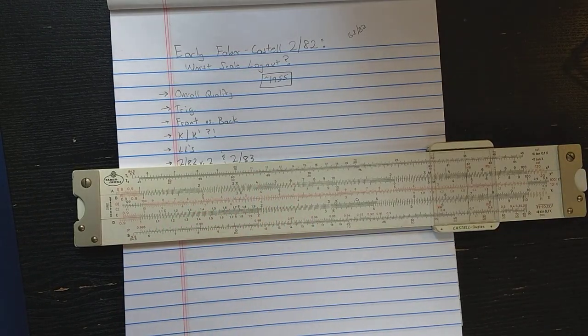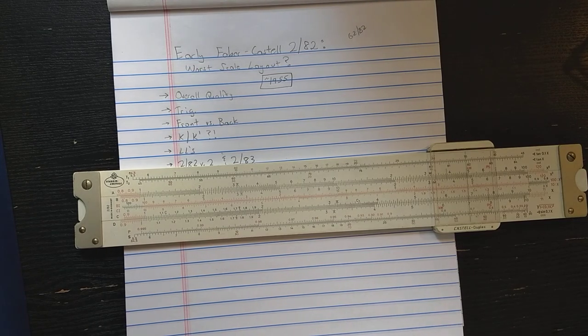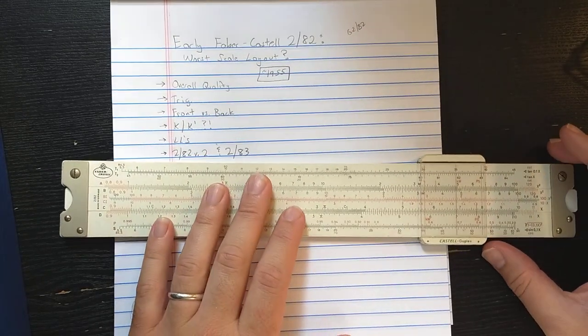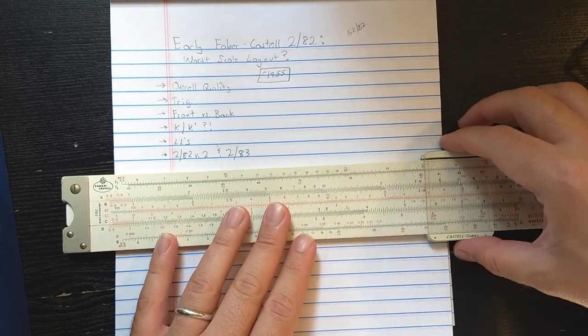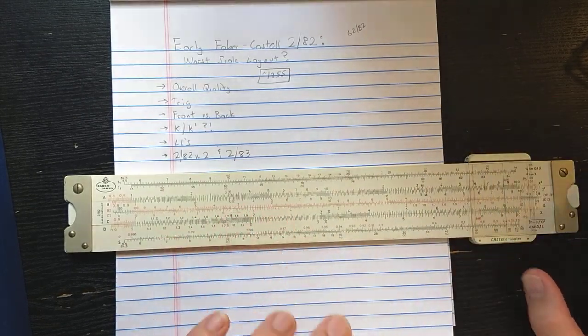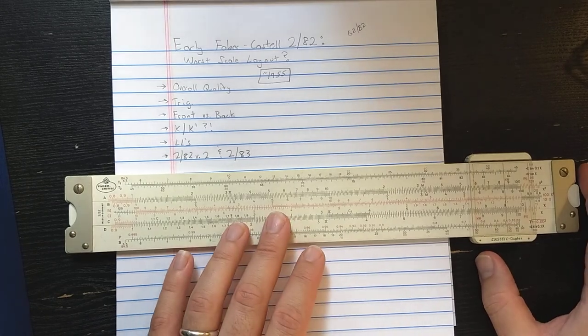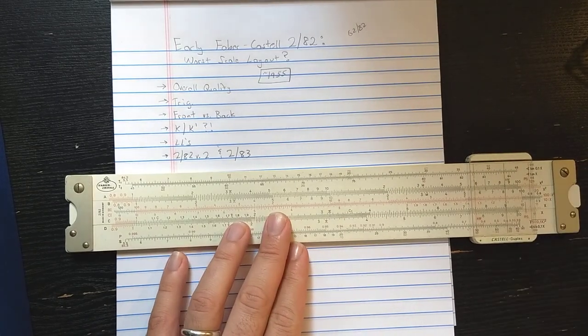Okay, let's talk about what makes this one of the worst scale designs in my mind that I've seen on a duplex slide rule. Okay, looking at this side, you might not be able to tell.